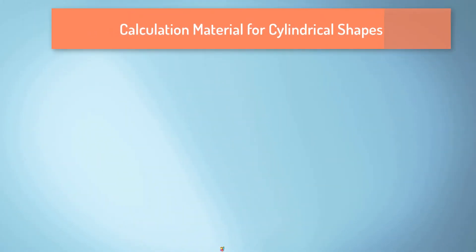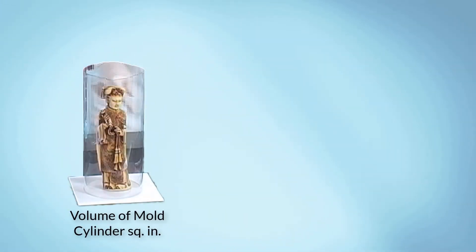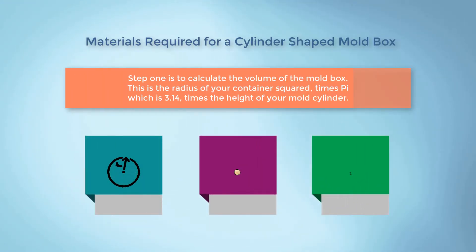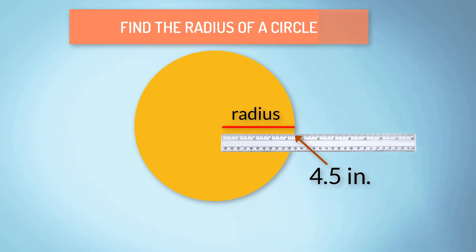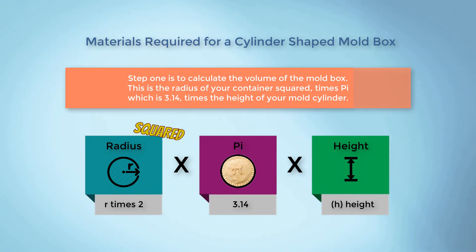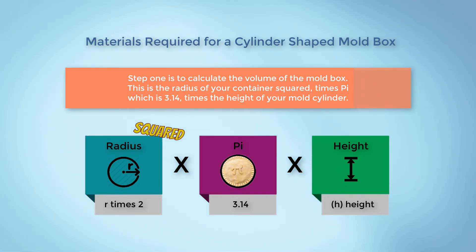Now for something a little different. For cylindrical shapes, we need just a bit more math to calculate them. Don't be put off by it, as it is still straightforward — you want to find the volume of the mold cylinder and the model itself, then subtract the volume of the model from the volume of the mold cylinder. To do that, we must find the radius of the cylinder. The radius is found by measuring from the center of the circle of the cylinder to its outside edge. Using your calculator, multiply the radius times itself — this produces the radius squared. Jot that answer down. Now multiply the height of the cylinder times pi, which is 3.14. Then multiply this answer times the radius squared. The result is the volume of the cylinder.